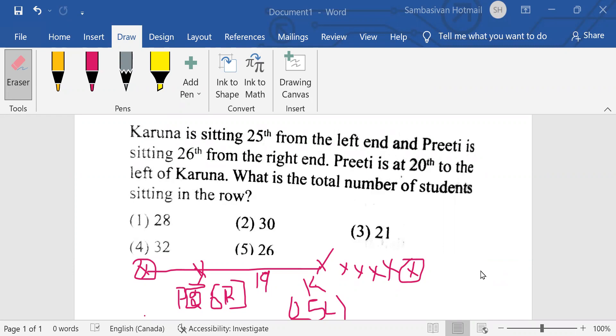The answer is 30. How? Because Karuna is 25th from left and Priti is 26th from the right. But the position of Priti is 20th from Karuna. That means there are 19 candidates in between Priti and this person.